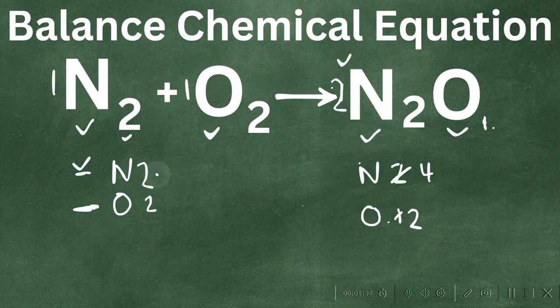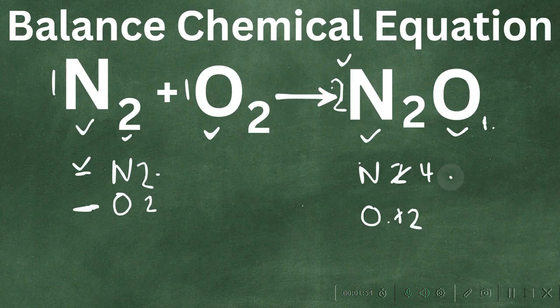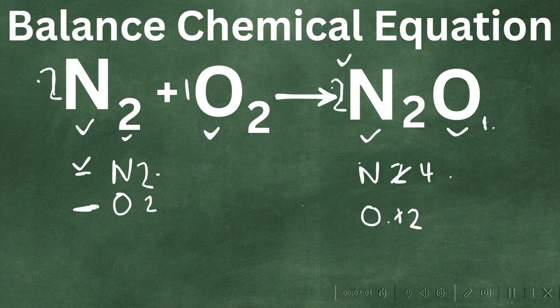So we have 2 on this side and 4 on this side, so why don't we just do this? Why don't we just convert this to a 2? So 2 times 2, that now becomes 4.